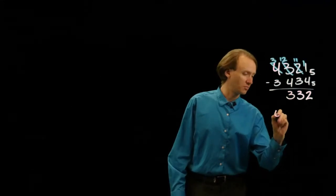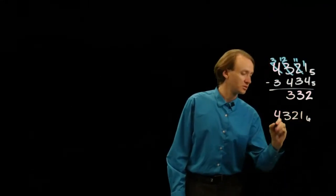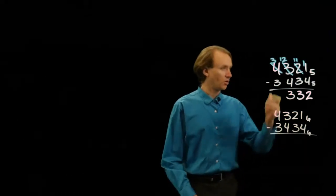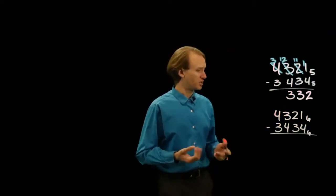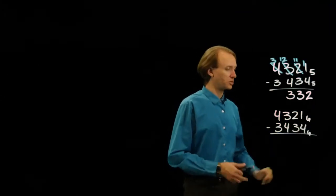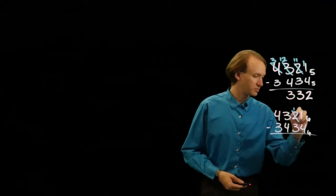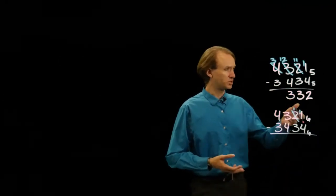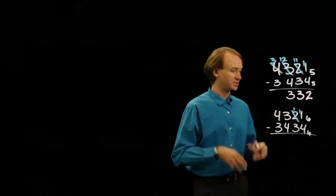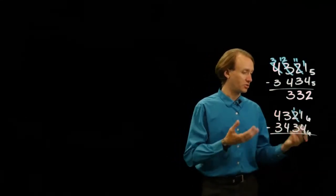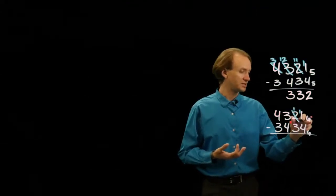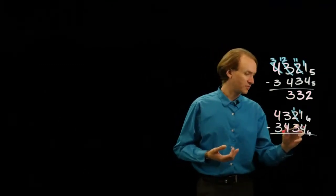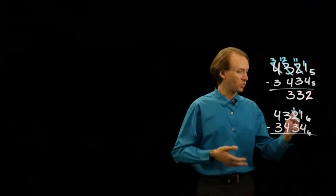If I try those same numbers in base 6, I'll get a slightly different result, because all of those borrows will work a little bit differently this time. So 4 is still greater than 1, so I'll need to borrow something. 2 becomes a 1, my 1 becomes an 11, and now I have 11 minus 4. Before it was 2 when I was in base 5, but this time my 10 actually has a slightly greater value, so I'll get a slightly larger result. I could say 10 is 6, so 6 plus 1 would give me 7, and 7 minus 4 is 3. Or I could say 10 minus 4 leaves me with 2, and 2 plus 1 is 3.